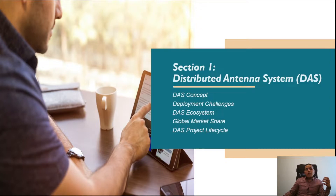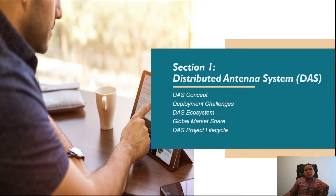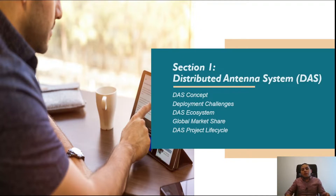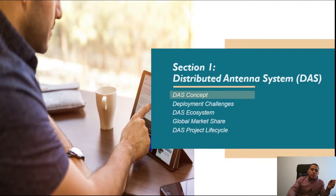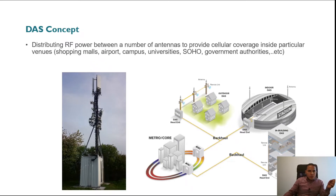After commissioning, you do acceptance tests on the network. After that you might need to optimize your network to provide adequate coverage and make sure you achieve your KPIs. Later in the future you might also need to do monitoring on your network. So session one is about the DAS concept — distributed antenna system.